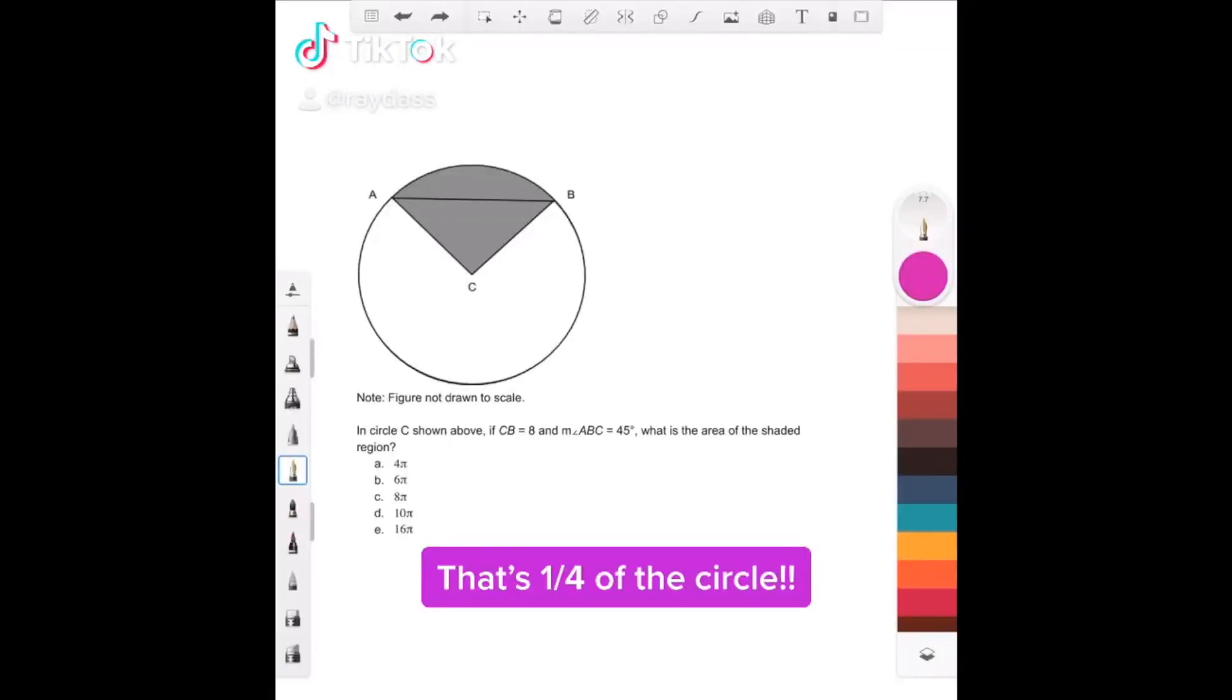If we have something that looks complex, just go step by step. In circle C shown above, if CB is 8, this is a radius, so that means this is also a radius and they would both be 8.